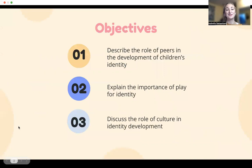Of course, we have our objective slides. So after this chapter, you should be able to describe the role of peers in the development of a child's identity, explain the importance of play for identity, and discuss the role of culture and identity development. These three objectives are just to guide you while you're reading your text, watching the presentation, and doing your assignments for the week.